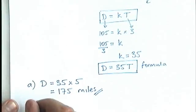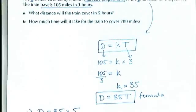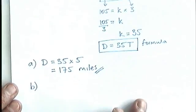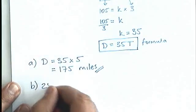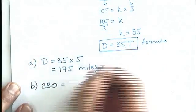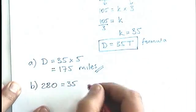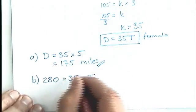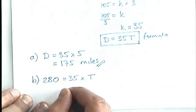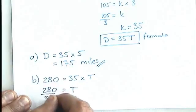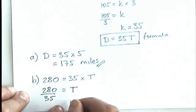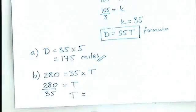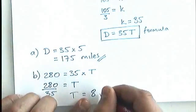And part b says how much time will it take for the train to cover 280 miles? So this time we're starting with the distance, which is 280. It's equal to 35 multiplied by the time. That's what we're trying to work out. So we're going to divide by 35. And if we do that, 280 divided by 35, I get 8 hours.